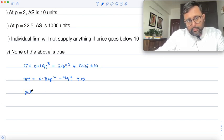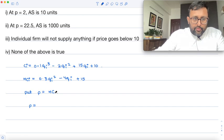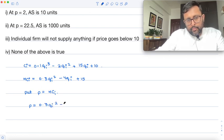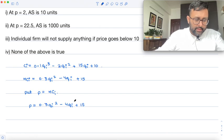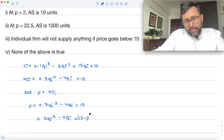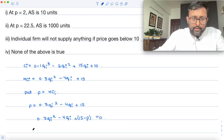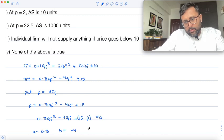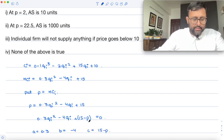So I'll put P equals MC. In place of marginal cost of the ith firm, I'll put P. If you want to see the recording based on the individual supply curve, this must be there in the microeconomics playlist. You can see that. Let me just write this in this fashion. So I need to find out Qi here. Minus 4Qi plus 15 minus P equals 0. So here A is 0.3, B is minus 4, C is 15 minus P.